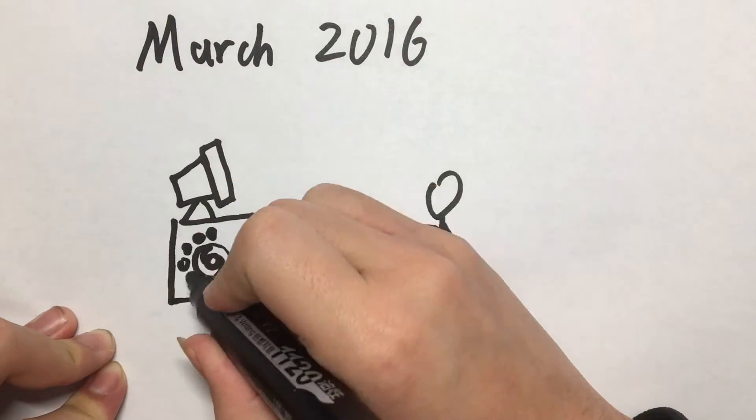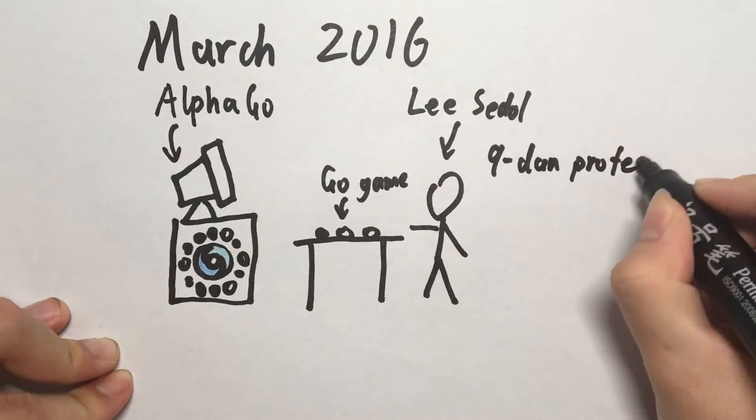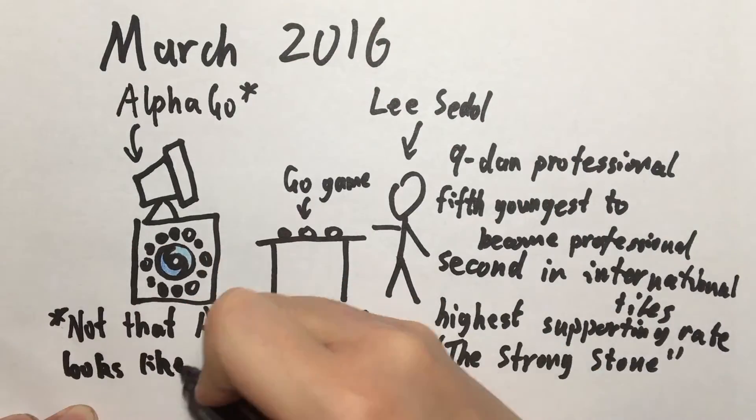In March 2016, the computer program AlphaGo defeated Lee Sedol, an 18-time world champion, in a Go match.